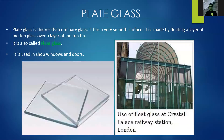Plate glass is also called float glass. It is used in shop windows and doors. Plate glass is thicker than ordinary glass, has a very smooth surface, and is made by floating layers of molten glass over a layer of molten tin.